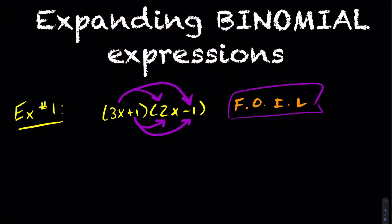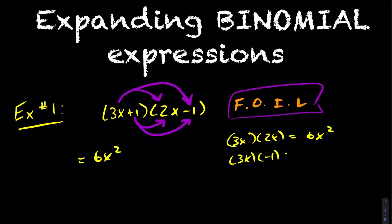Let's write this off to the side so you can see. We're going to do the first term, so it's going to be 3x times 2x — coefficients come together, and x times x is x squared. Then 3x times negative 1, which gives minus 3x.